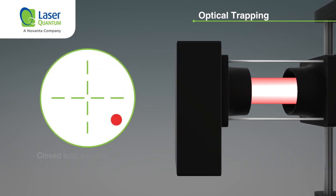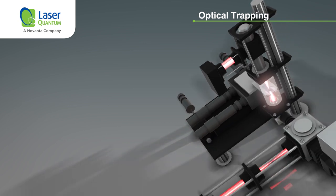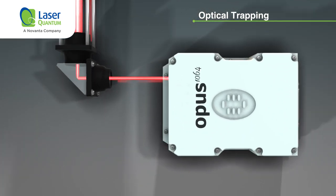A quadrant photodiode tracks the position of the particle by beam deflection and references the position of the sample. Commonly, near-infrared beams including 1064 nanometers are used, though sometimes visible wavelengths are suitable.